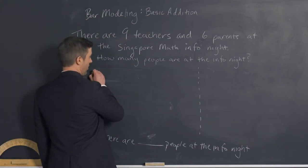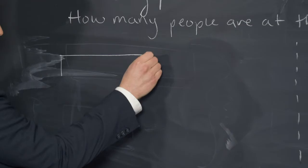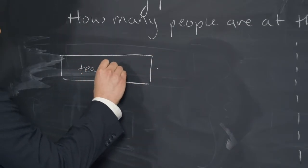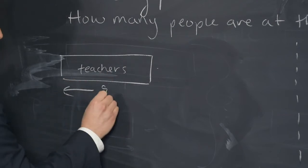We would draw - again, there are nine teachers, so I have nine teachers. This would be my teachers, representing that quantity, nine.